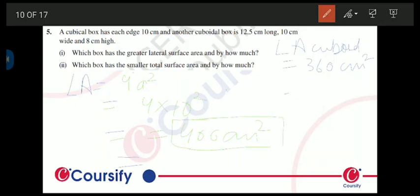Now as you can see we can easily compare that lateral surface area of cubical box is greater than cuboidal box. How much is it greater? It is greater by 40 centimeter square. How? 400 which is the cubical minus 360 which is of cuboidal. So this is the first answer, the comparison of lateral surface area between cubical box and cuboidal box.